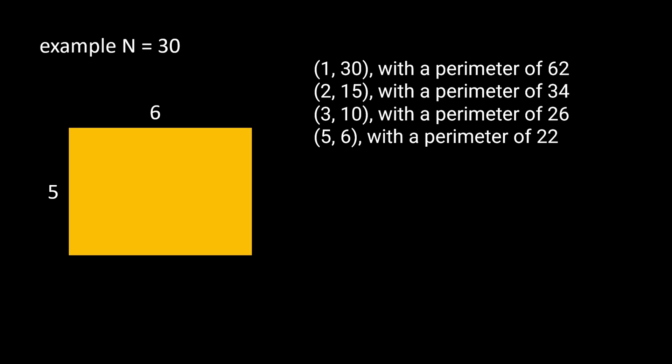For each couple of dimensions we are going to calculate the perimeter, checking for each iteration or each couple of dimensions if we have a new minimal value. At the end when we have exhausted all the cases, all the couple of dimensions, we can return the minimum value that we have found.